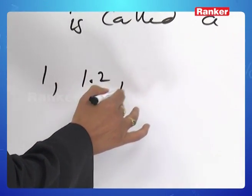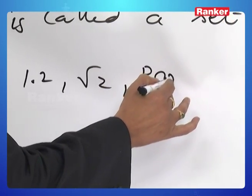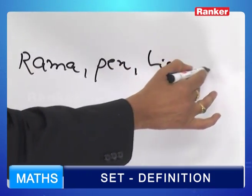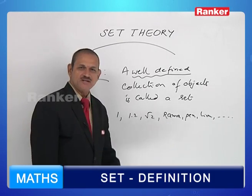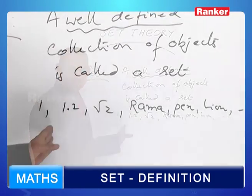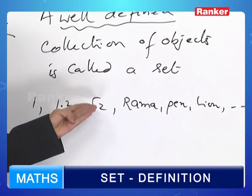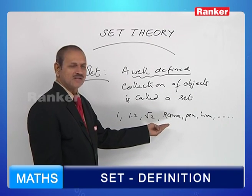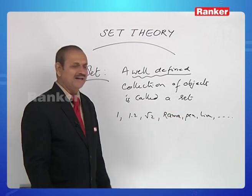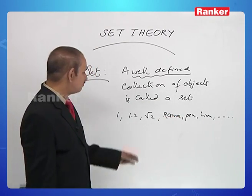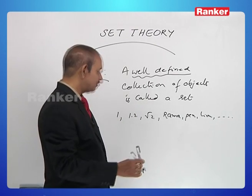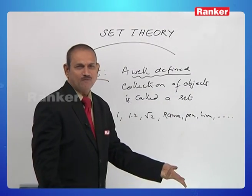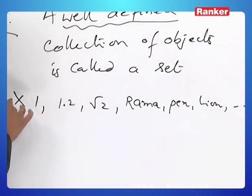Look at this collection: 1, 1.2, root 2, Rama, Pen, Lion, etc. What type of collection can you say about this? Collection of natural numbers? No. Collection of decimal fractions? No. Collection of irrational numbers? No. Rama is the name of a male person, Pen is an article, and an animal is there too. Suppose a pencil is there — does that element belong to this collection? We cannot say. So we can say nothing about this collection.